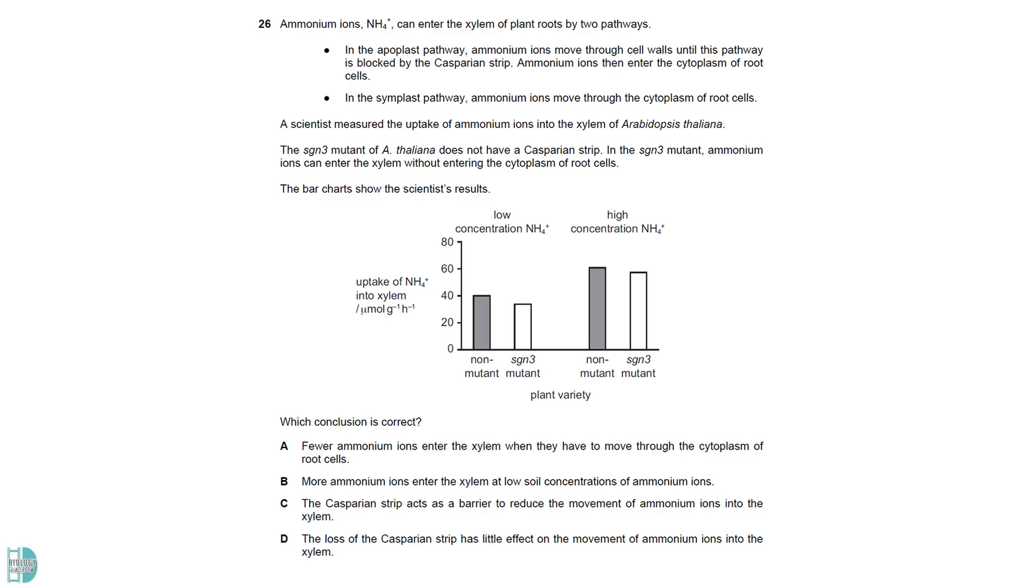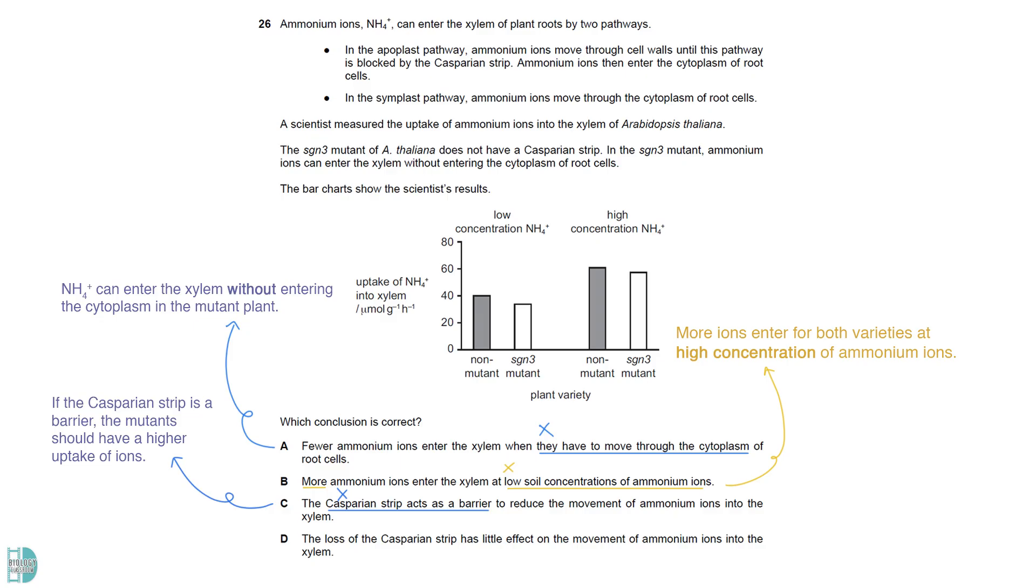A is wrong because the question mentioned that the ammonium ions can enter the xylem without entering the cytoplasm in the mutant plant. B is incorrect as the graph shows that more ions enter the xylem for both varieties where there is a high concentration of ammonium ions. C is wrong because, if the Casparian strip does act as a barrier, the mutant should have a higher uptake of ions. D is correct. In both low and high concentrations, the difference is not much.